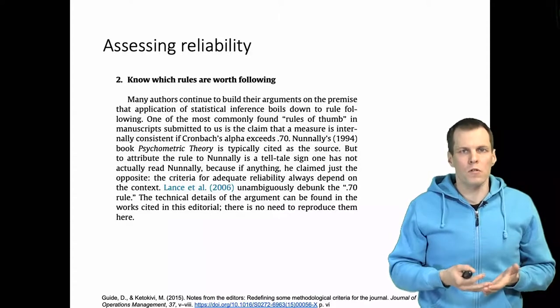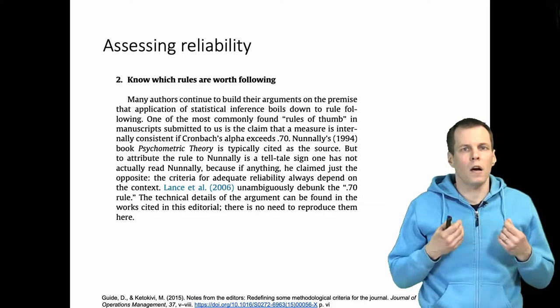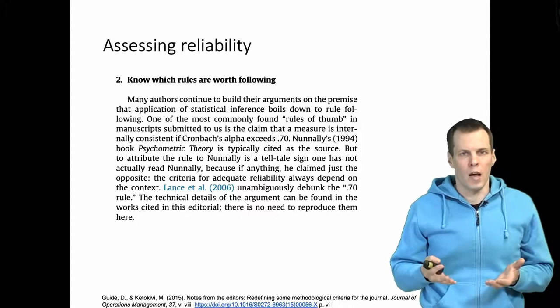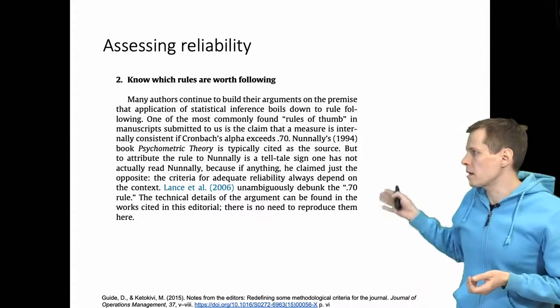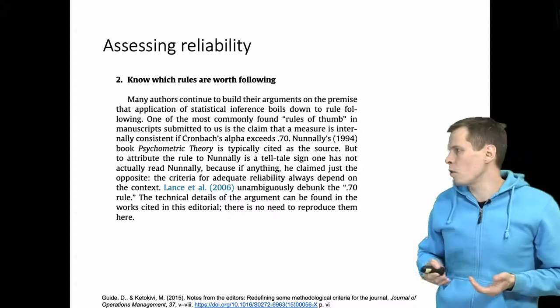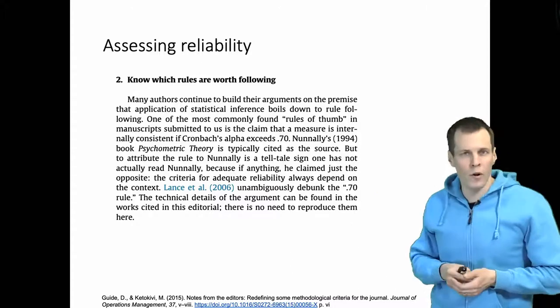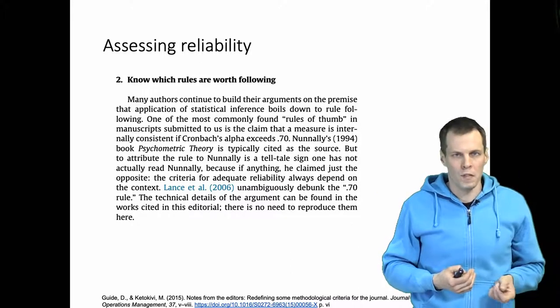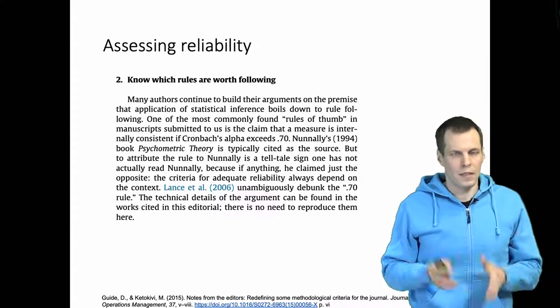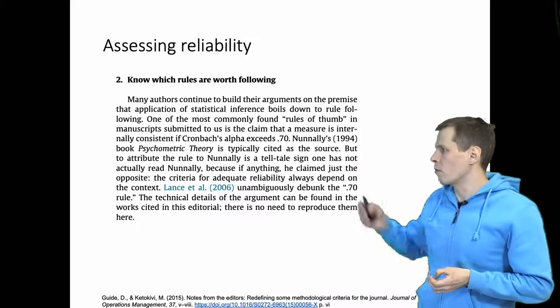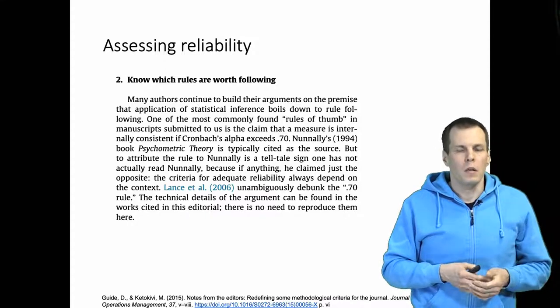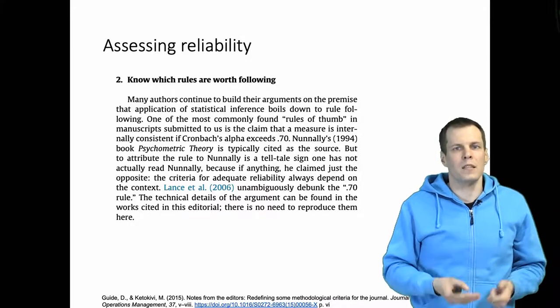There are some concerns in journals that authors who try to submit articles are using reliability statistics rather mechanically. This is an example from Guido and Ketokivi's editorial from Journal of Operations Management. These co-editors explain that quite commonly, people interpret reliability coefficients by simply checking if the coefficient is more than 0.7, and they cite Nunnally's book from 1994 or perhaps 1978, which is more common.